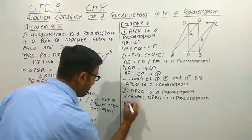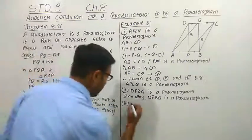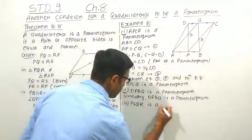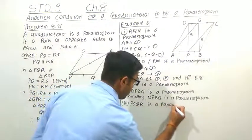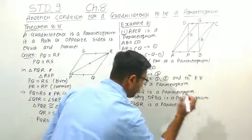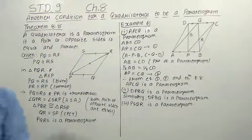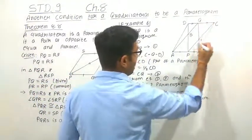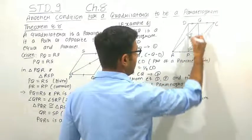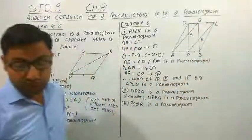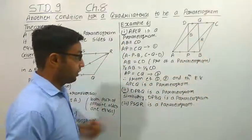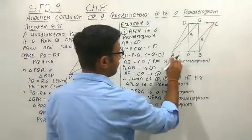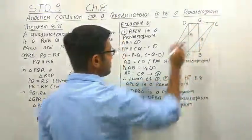The third thing is that PSQR — this interior quadrilateral PSQR — is a parallelogram. We have to prove that it is a parallelogram. We know that we have proved that APCQ is a parallelogram.